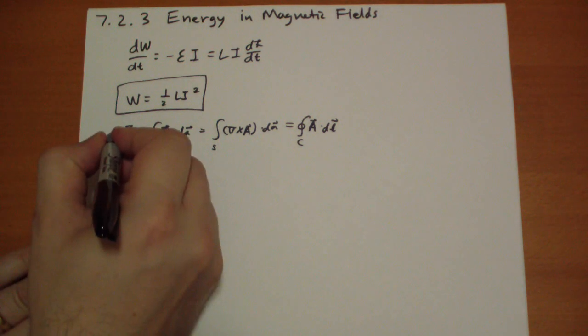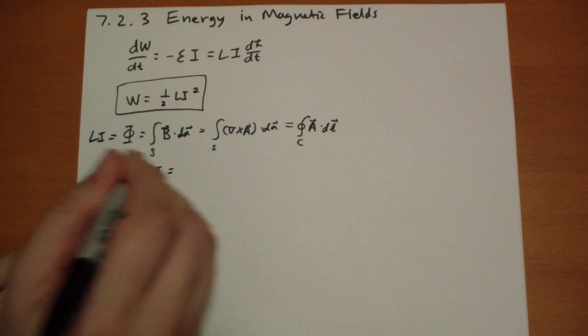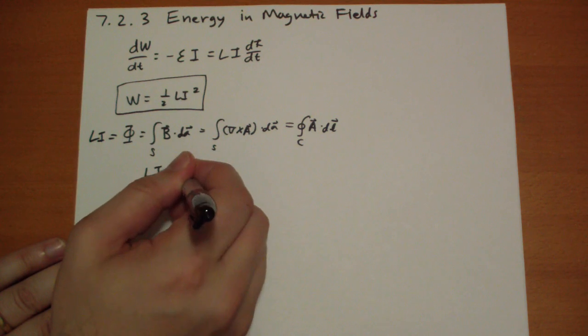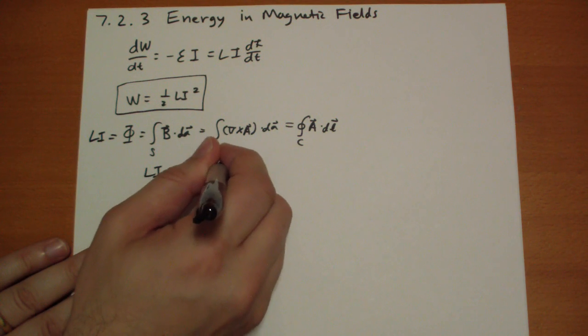So this was equal to Li. So we get Li is equal to closed loop over the circuit of A vector dot dL vector.